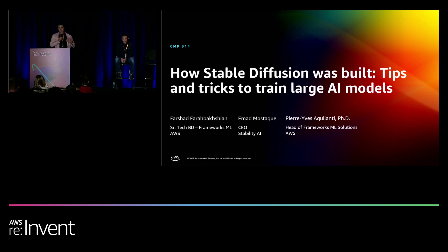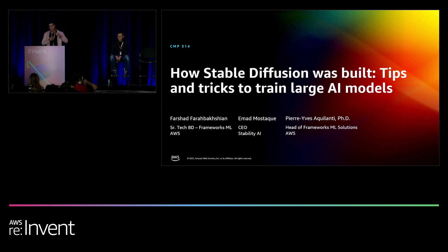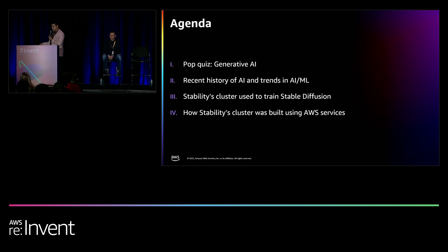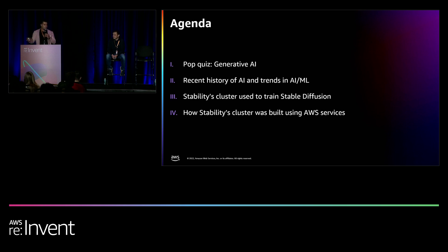Some of you are interested in building foundational models and some of you will be doing fine-tuning — a lot of what we'll talk about today will apply to both. We're probably not going to spend as much time on the inference side, but we'll certainly spend a lot of time on training. Here's our agenda: we'll start with a pop quiz about generative AI with prizes — water bottles. Then we'll go through the recent history of AI and some of the trends it's causing. When Imad gets here, the CEO, he's going to cover the Stability cluster used to train Stable Diffusion and show a preview of new models. Then Pierre will cover how to build this on AWS.